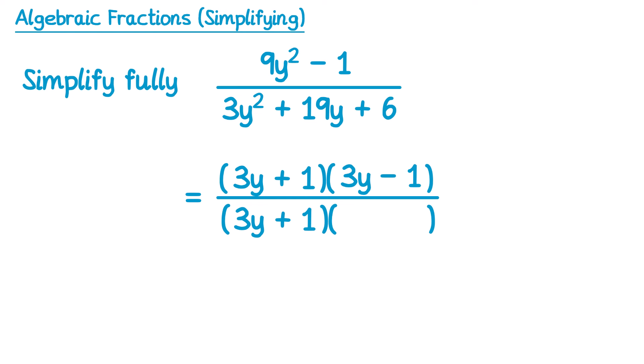Now if it were 3y plus 1, what would the other bracket need to be? Well to get the 3y squared we would multiply 3y by y. And to get the final term, the 6 at the end, we need to multiply the 1 by 6. And you can check this one and it does indeed work, because when you multiply 3y by 6 you get 18y, and when you multiply 1 by y you get 1y, and 18y plus 1y gives you 19y. So even though this quadratic would normally be quite difficult to factorise, it was made a little bit easier by looking at the brackets we had when we factorised the numerator. So we can now go ahead and cancel — these two brackets are the same so they'll cancel out, leaving us with 3y minus 1 on the top and y plus 6 on the bottom.